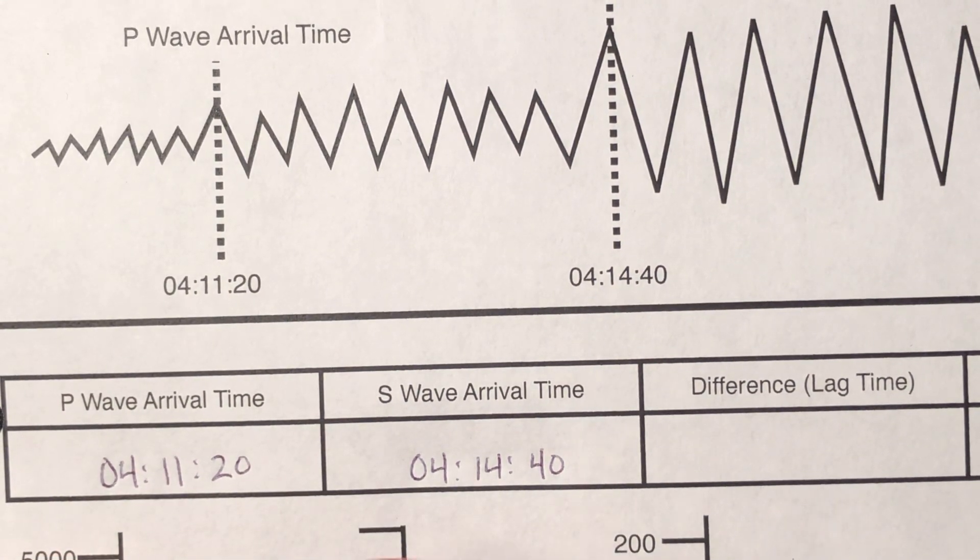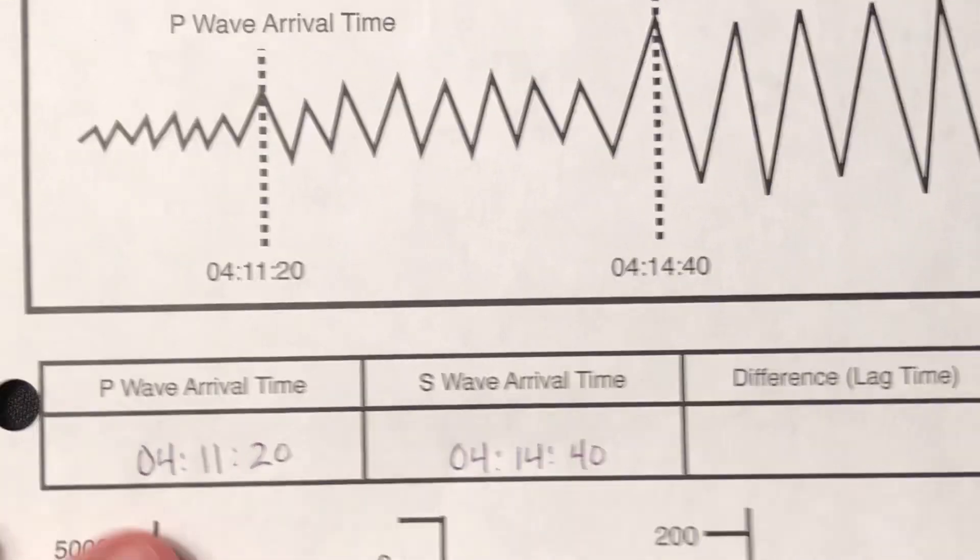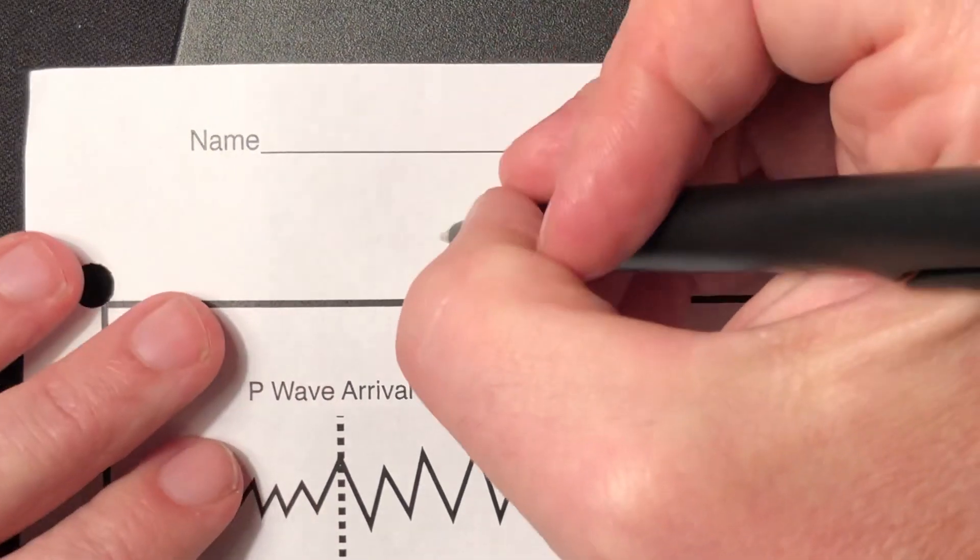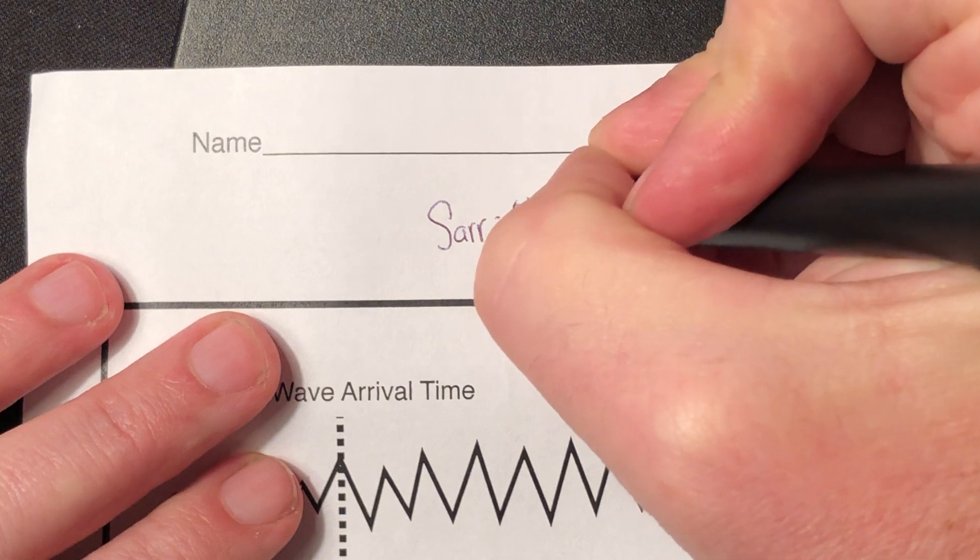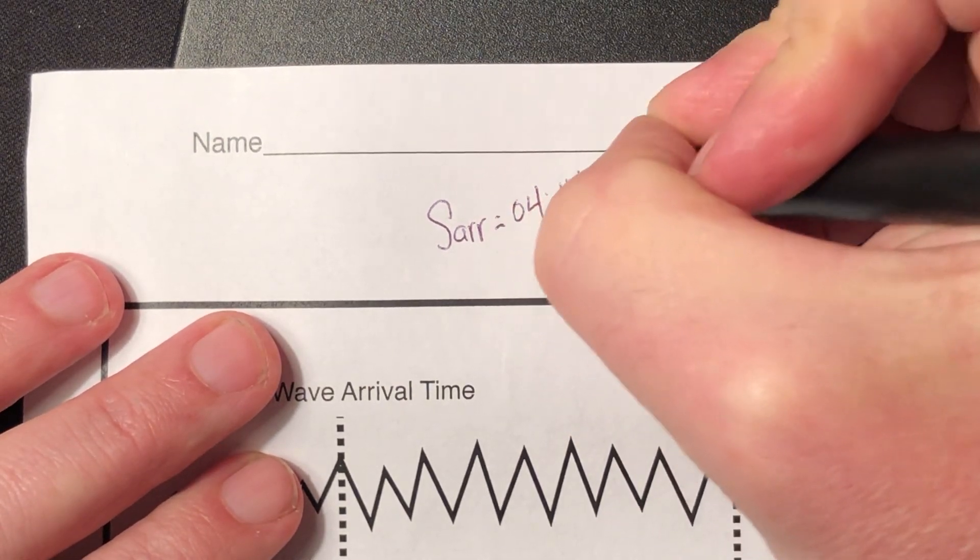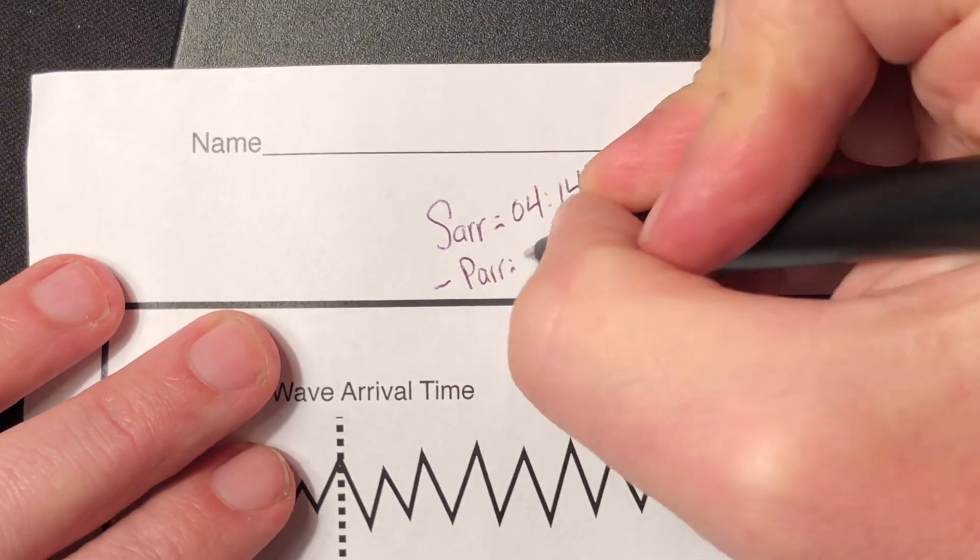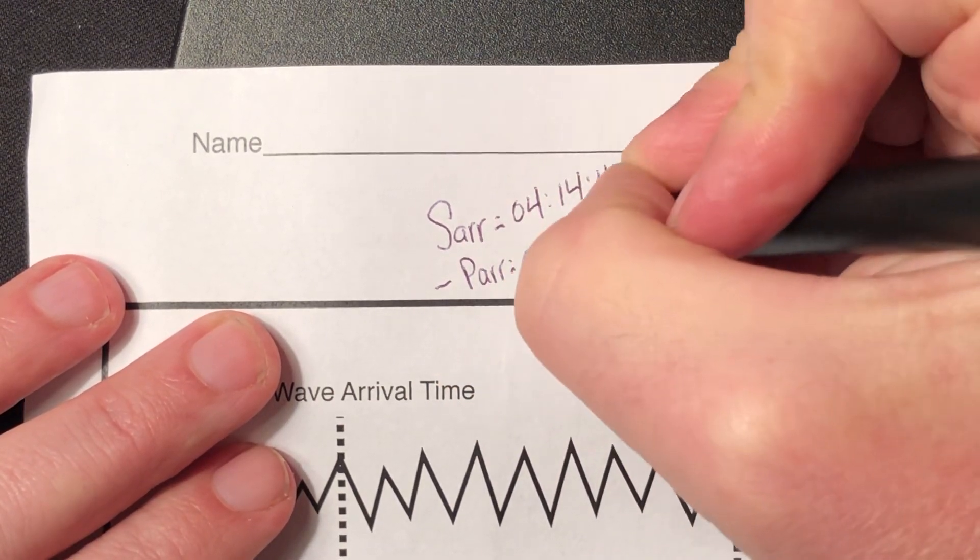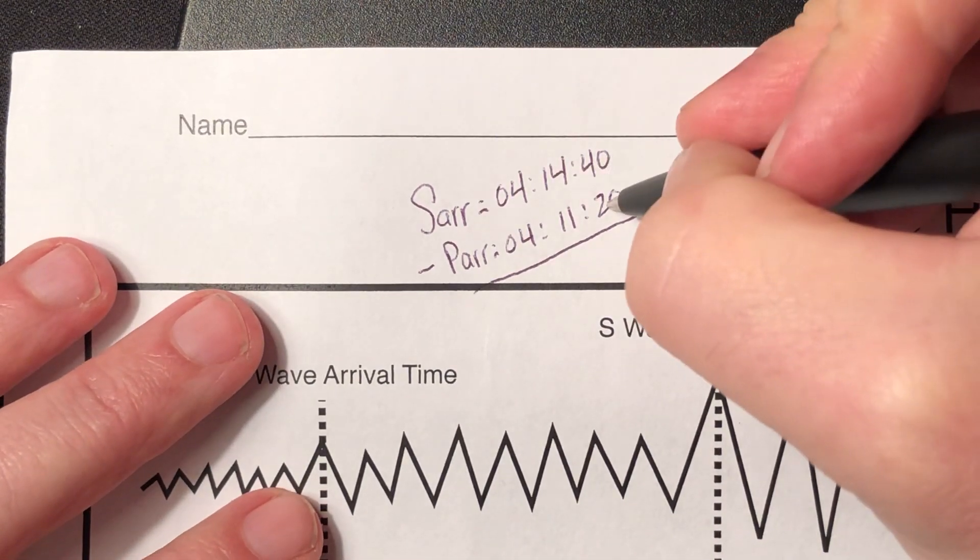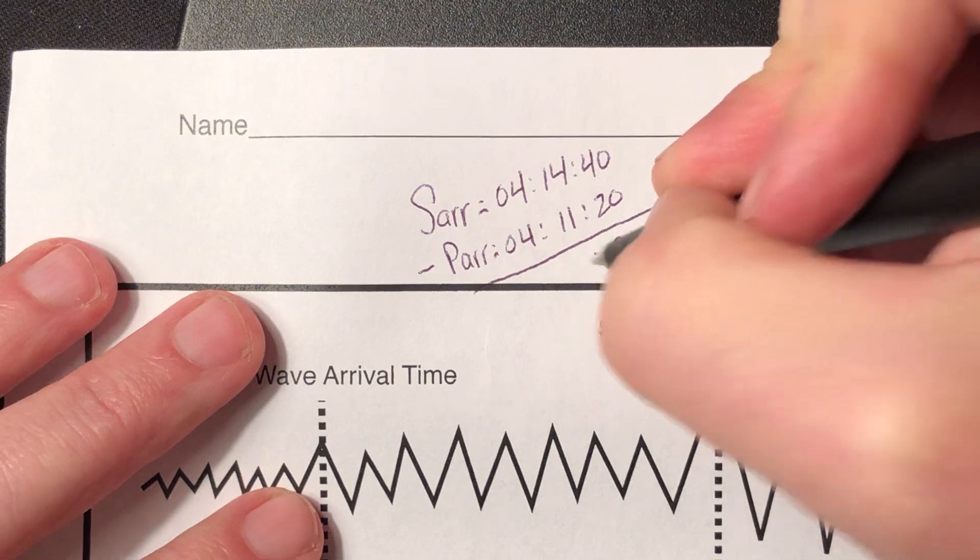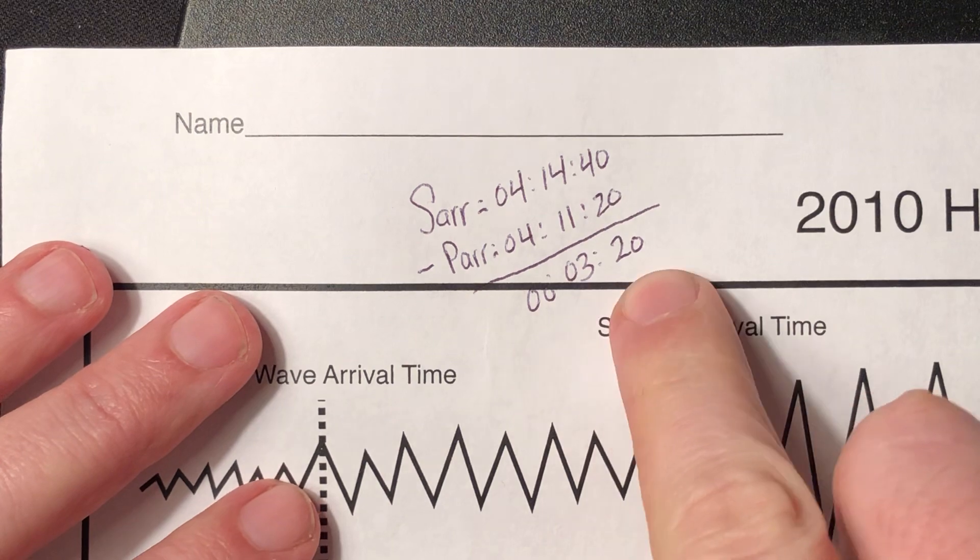What I'll end up doing is, I know a lot of you are going to be able to do your time math in your head. Instead, I like to actually write it out. So let me write it out up here. And your S-wave arrival time is always going to go on top, because it's always a later time. 4, 14, 40. The P-wave always on the bottom. 4, 11, 20. So that subtraction is pretty straightforward. 20 from 40 is 20, 3, and then 0. So 0 hours, 3 minutes, and 20 seconds.